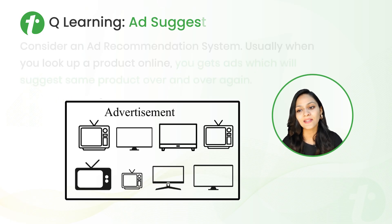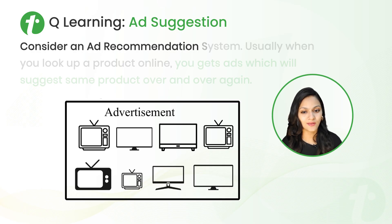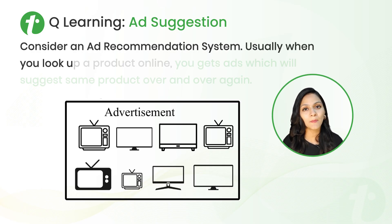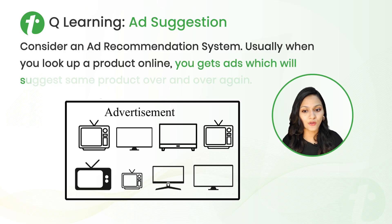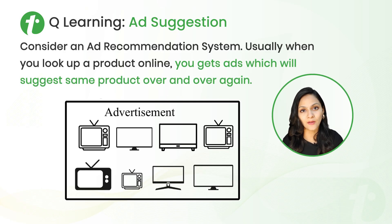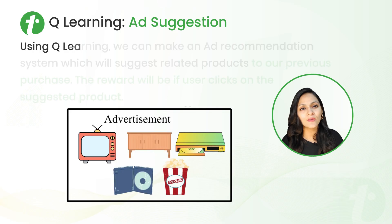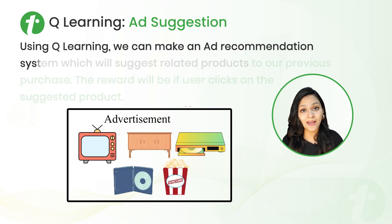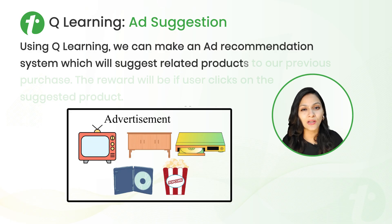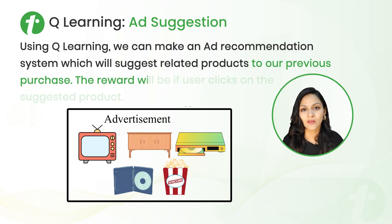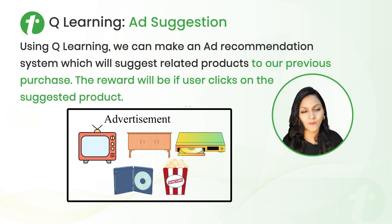Now let's consider an ad recommendation system. Usually when you look up a product online, you get ads which suggest the same product over and over again. Using Q-learning, we can make an ad recommendation system which will suggest related products based on previous purchases. The reward will be if the user clicks on the suggested product.